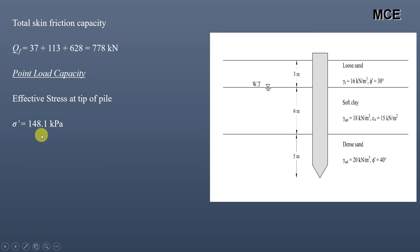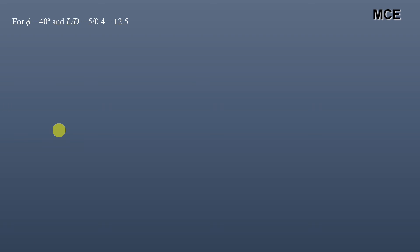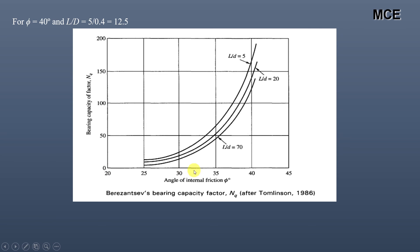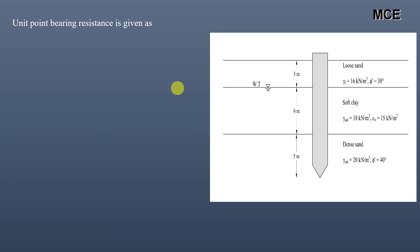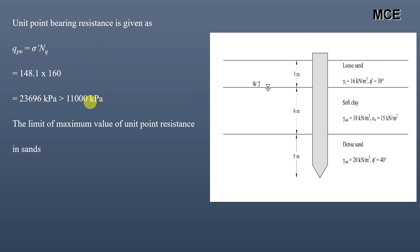We find the bearing capacity factor Nq for the pile in the dense sand layer using Berezantsev's bearing capacity factor chart. For phi = 40 degrees and l/d = 12.5, the value of Nq from the chart, found by interpolation, is 160. The unit point bearing resistance = effective stress × Nq = 148.1 × 160 = 23,696 kPa. This is greater than 11,000 kPa, which is the limit of unit point resistance in sand, so unit point resistance is taken as 11,000 kPa.